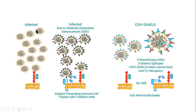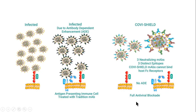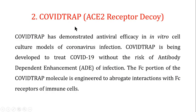Without antibody treatment, the virus interacts with the ACE2 receptor on lung cells and enters the cell to multiply. With COVI-SHIELD, three neutralizing monoclonal antibodies — the antibody cocktail — attach to three distant epitopes on the spike protein. When they bind, they do not allow the virus to interact with the ACE2 receptor, resulting in full antiviral blockage. There is no antibody dependent enhancement because the COVI-SHIELD monoclonal antibodies do not bind to the host's Fc receptors.